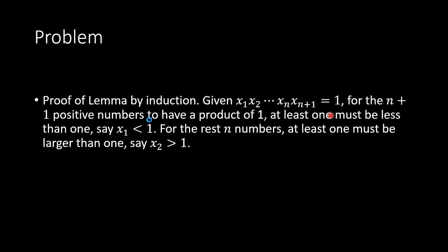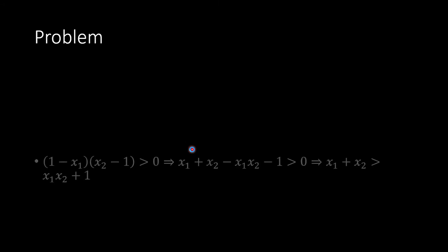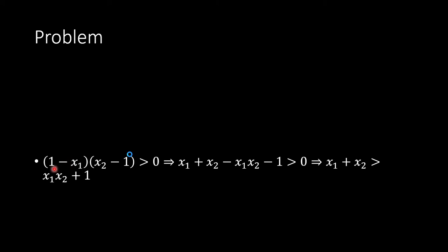So at least one of them must be less than 1 — we say that number is x1, so x1 < 1. The remaining n numbers, x2 through x(n+1), cannot all be less than 1 either, otherwise the product would not equal 1. So at least one of them, say x2, must be larger than 1.